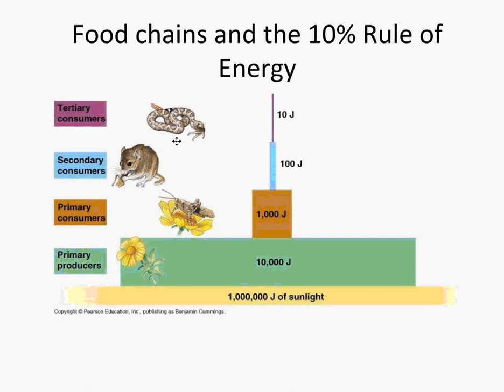There are a lot fewer mice than grasshoppers, and a lot fewer snakes than mice, because there's just not enough energy to sustain them. Eventually you get to an end where nothing is eating the next thing. Those are called apex predators — they're at the top of their food chain because nothing can afford to prey on them energy-wise. This follows closely with our idea of thermodynamics: energy transfers, energy is not created or destroyed, and in these transfers there's a loss of efficiency as heat energy is lost.